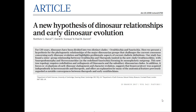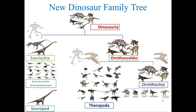A paper by Baron, Norman and Barrett published in Nature in March 2017 gave a new hypothesis on dinosaur phylogeny — that is, the dinosaur family tree. According to this latest hypothesis, Theropoda is no longer considered the sister clade of sauropods, and they are not included in the clade Saurischia. That means the new classification is not based on hip bone structure.